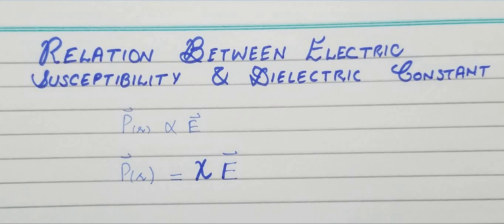As you know, polarization is directly proportional to the applied electric field on the material. This means we are putting a material in an electric field and the material gets polarized. When we remove the proportionality sign we get an equal sign with a constant, chi (χ), which is the electric susceptibility — defined as the degree of polarization of the material in response to the externally applied electric field.